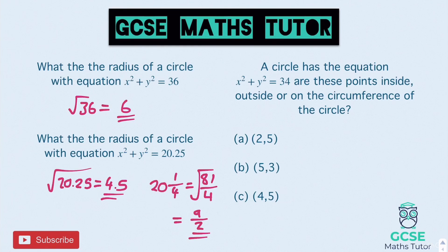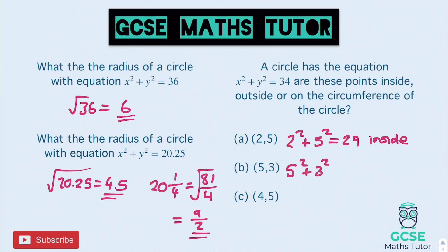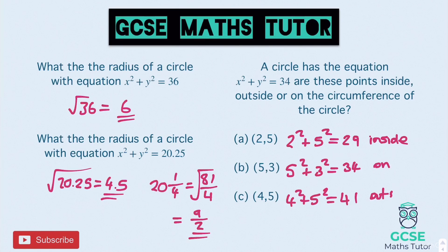For the last practice question: a circle has the equation x squared plus y squared equals 34. Subbing in (2, 5): 2 squared plus 5 squared is 4 plus 25, which is 29 — smaller than 34, so that's inside. For (5, 3): 25 plus 9 is 34, so that's on the circumference. And for (4, 5): 4 squared plus 5 squared is 16 plus 25, which is 41 — bigger than 34, so that's outside.